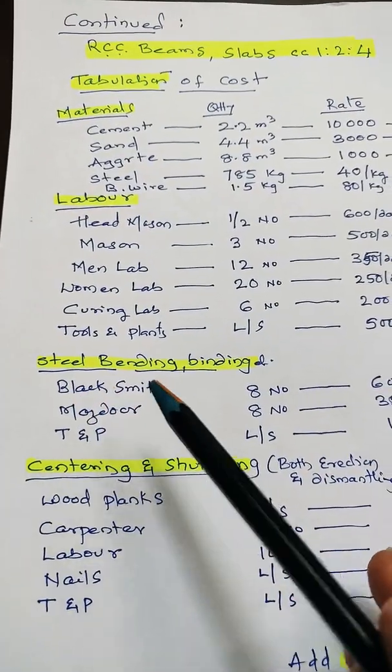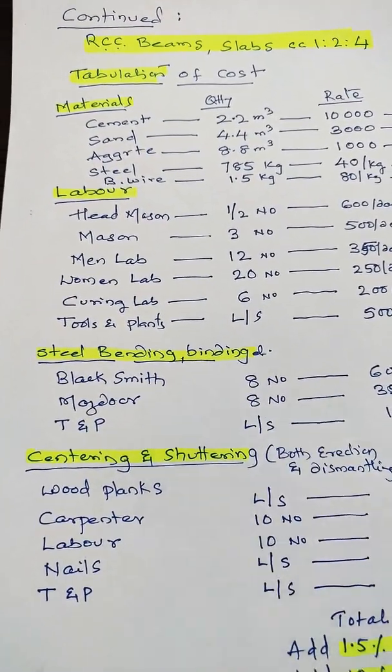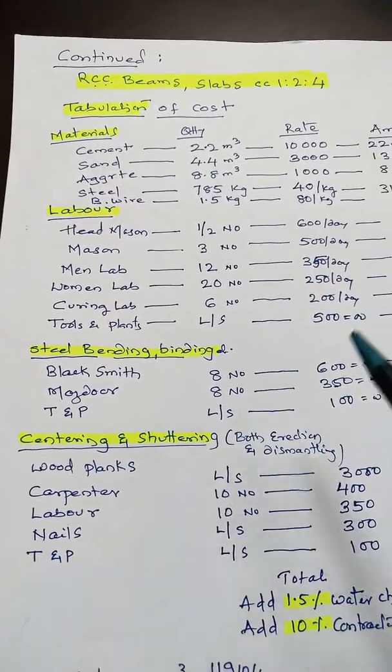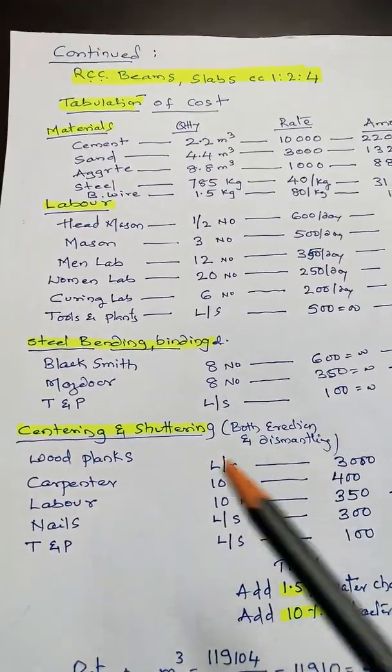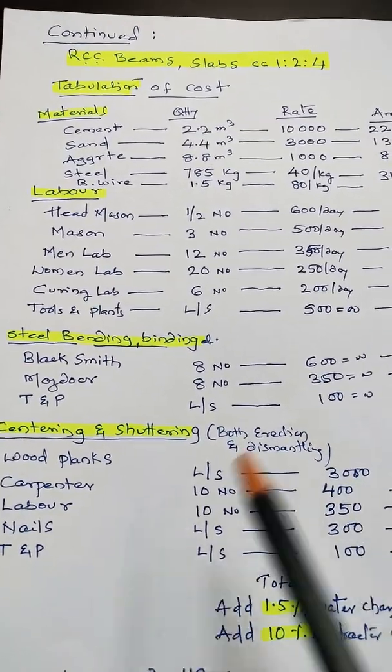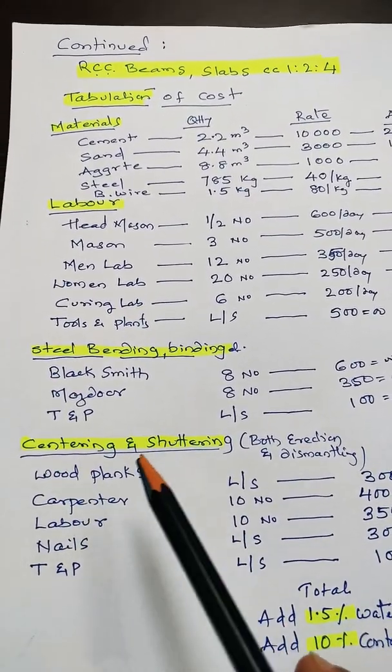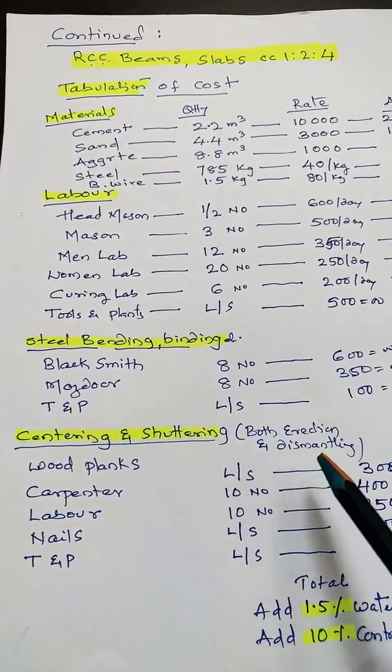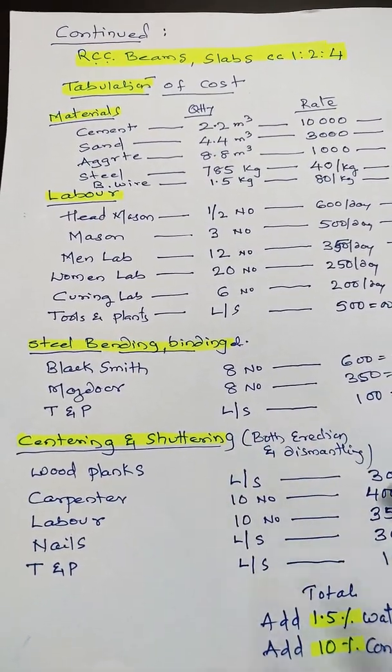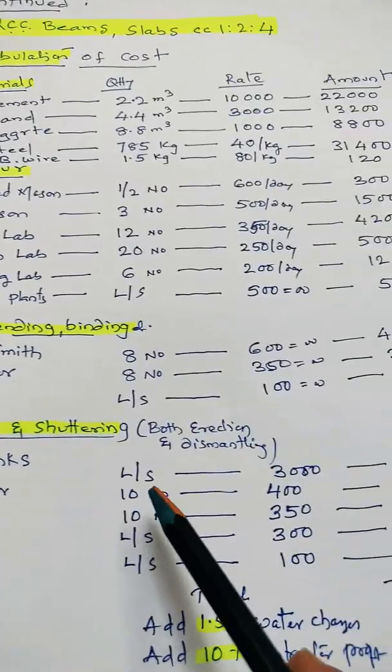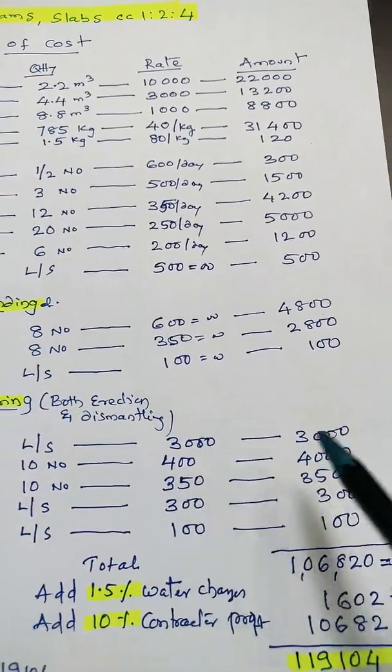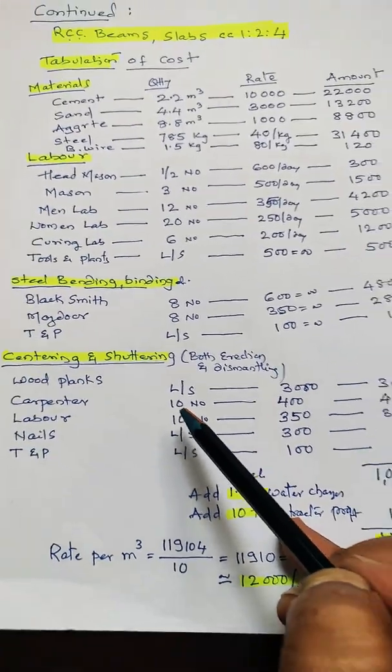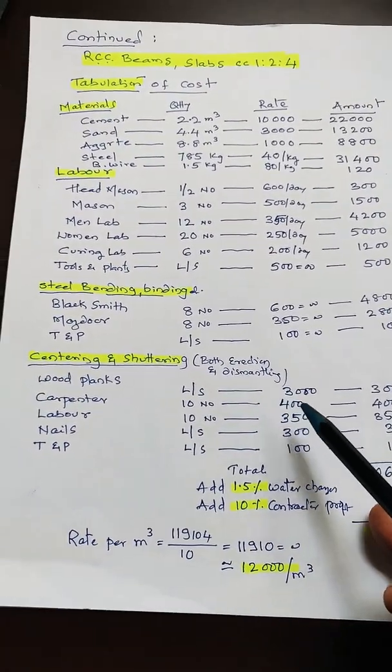Another main item is centering, because in beams and slabs you need lots of centering. Centering and shuttering - both erection and dismantling are considered. Wood planks: lump sum 3,000 rupees for 10 meter cube. Carpenter: 10 numbers at 400 rupees.